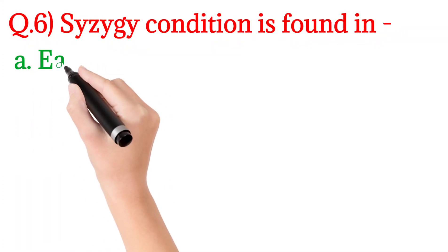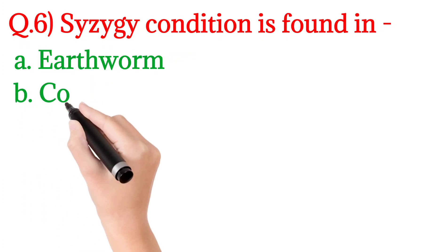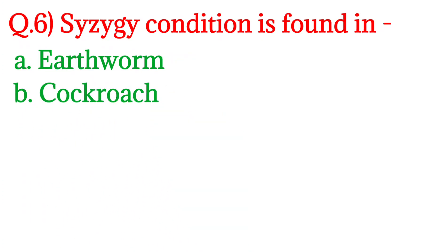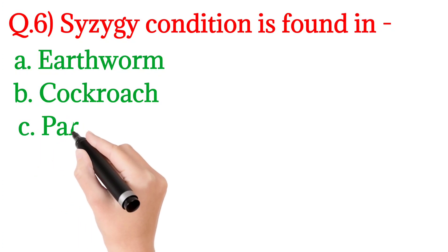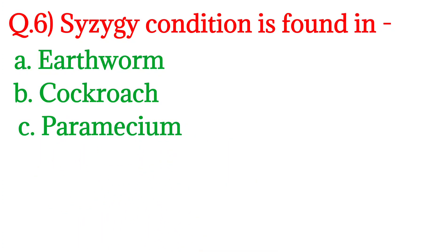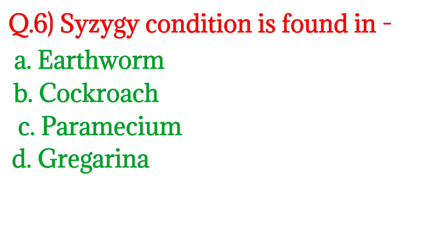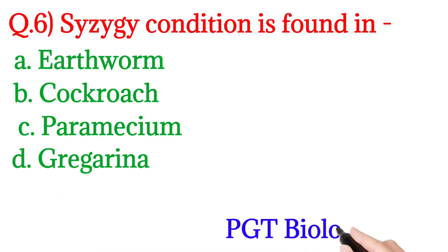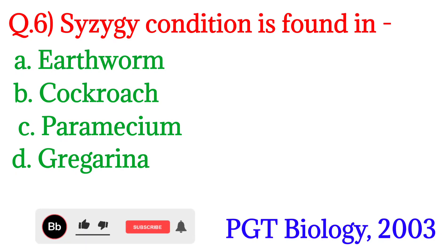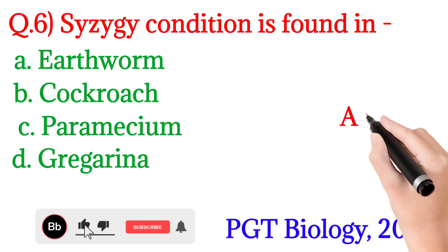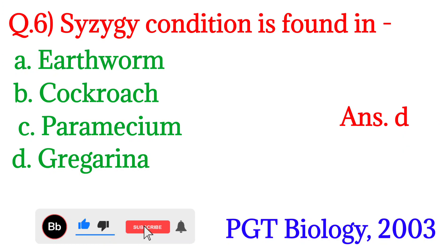Question 6: Syzygy condition is found in? Option A: Earthworm, Option B: Cockroach, Option C: Paramecium, Option D: Gregarina. This question was asked in PGT Biology 2003. The answer is Option D: Gregarina.